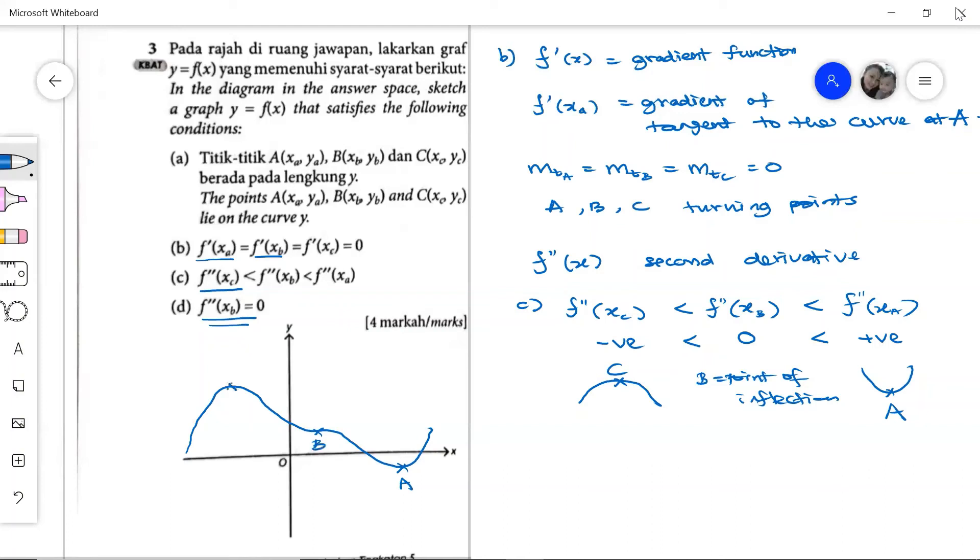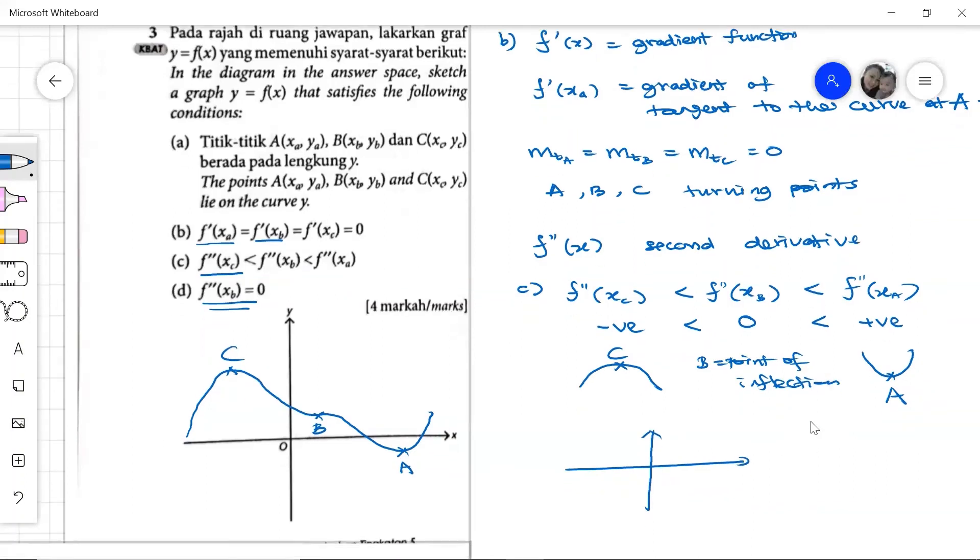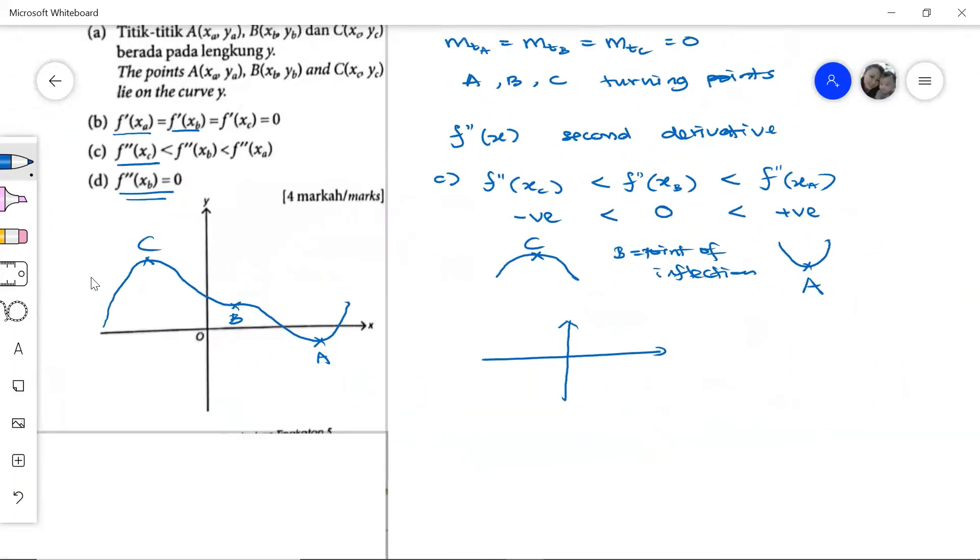And therefore, this one will be point c. Now, you may also give this kind of graph. Doesn't really matter where your graph intersect as long as it is in this shape. Or we can draw in a laterally inverted shape as well. So let's say we have a here. And then we have the c here. The inflection point b is here. And the minimum point a is here. So both graphs are acceptable. That's it for question number three.